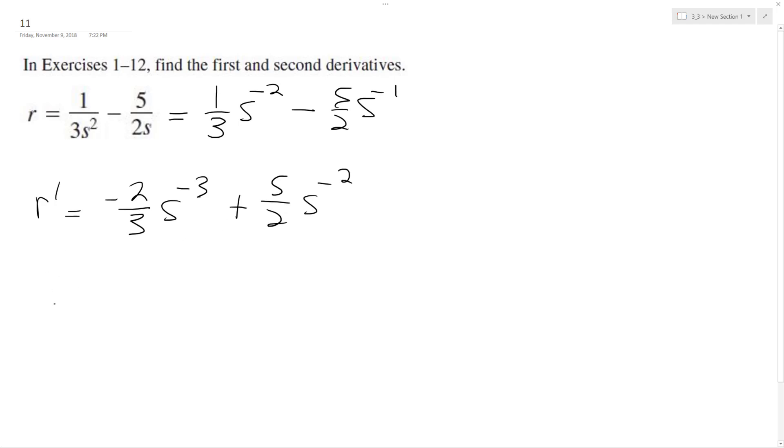So that's S prime, so S double prime which is the second derivative. Pull down the 3 so we end up with negative 2 3rds times negative 3 S raised to negative 4 plus 5 halves times negative 2 S raised to the negative 3.